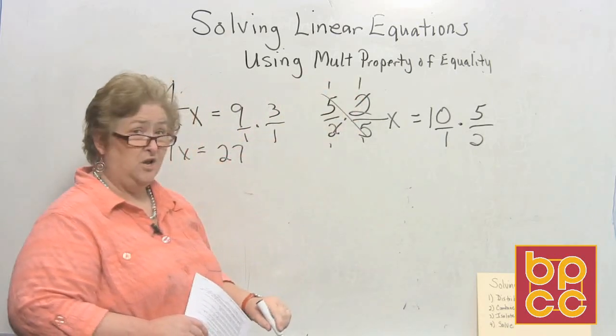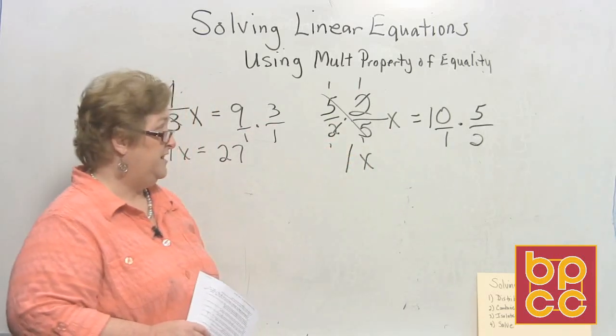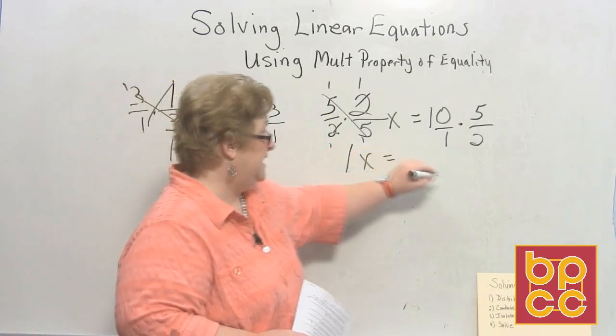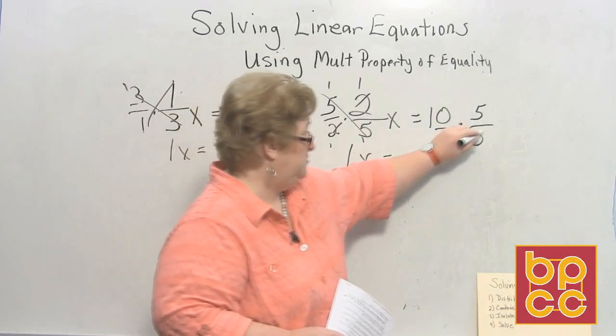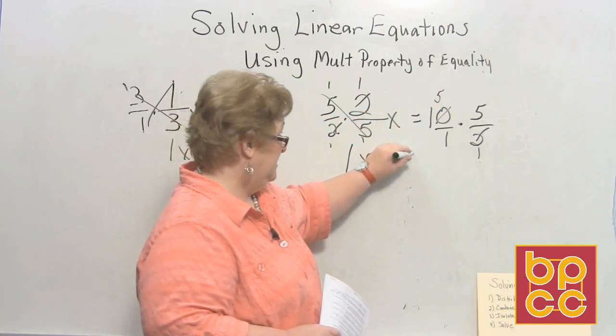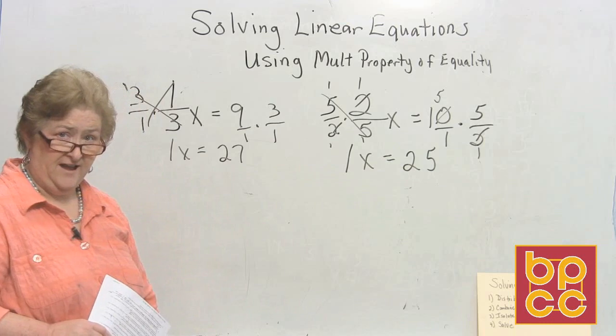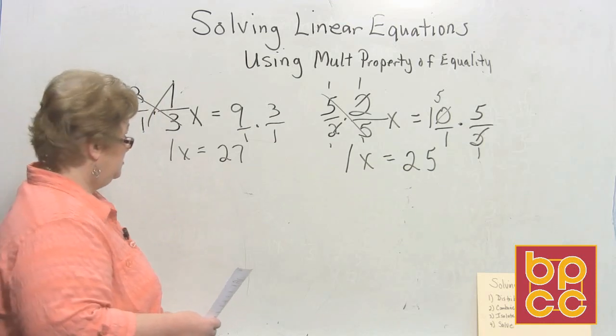And so we are down to the positive 1x that we want. And then over here, I like to take the shortcut, so I'll do 2 into 2 is 1, 2 into 10 is 5, 5 times 5 is 25. So x is equal to 25. Let's try another.